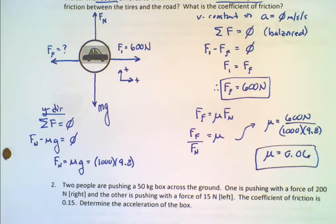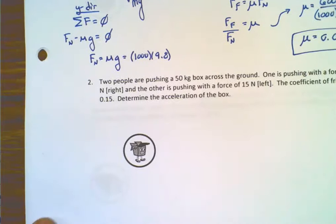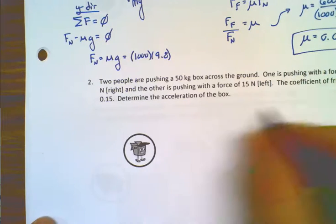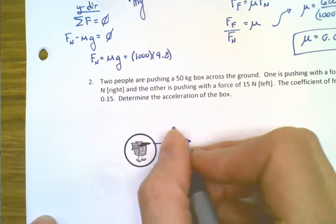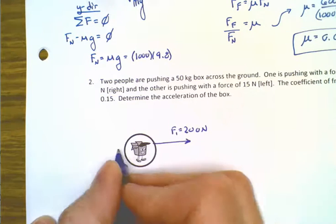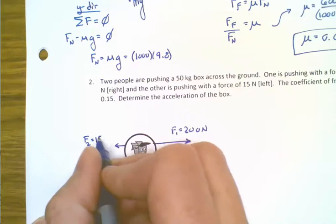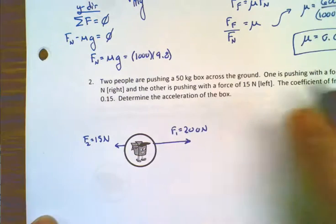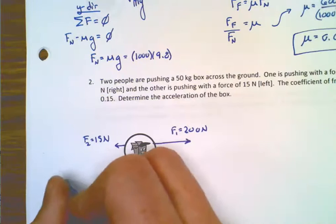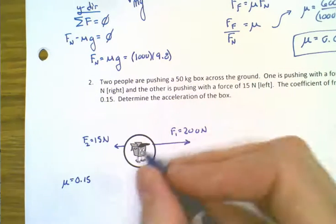Now that we've got that, what we're going to look at is the next part. We have two people pushing a 50 kilogram box across the ground. One is pushing with 200 newtons to the right, so we start our free body diagram. We say F1 equals 200 newtons. Another is pushing with a force to the left with only 15 newtons. The coefficient of friction is 0.15, and it's a 50 kilogram box.